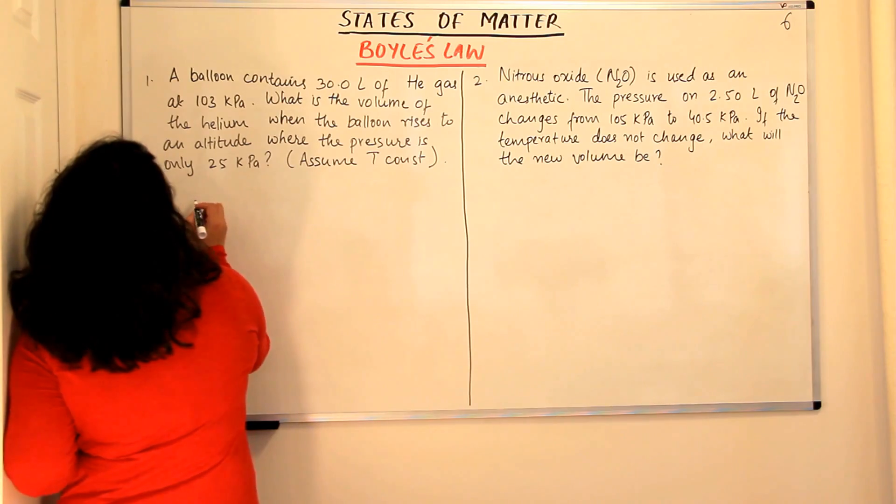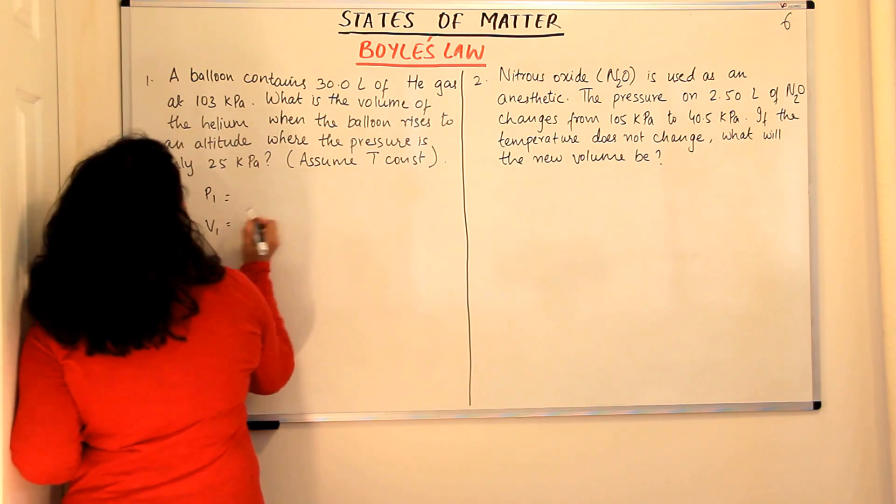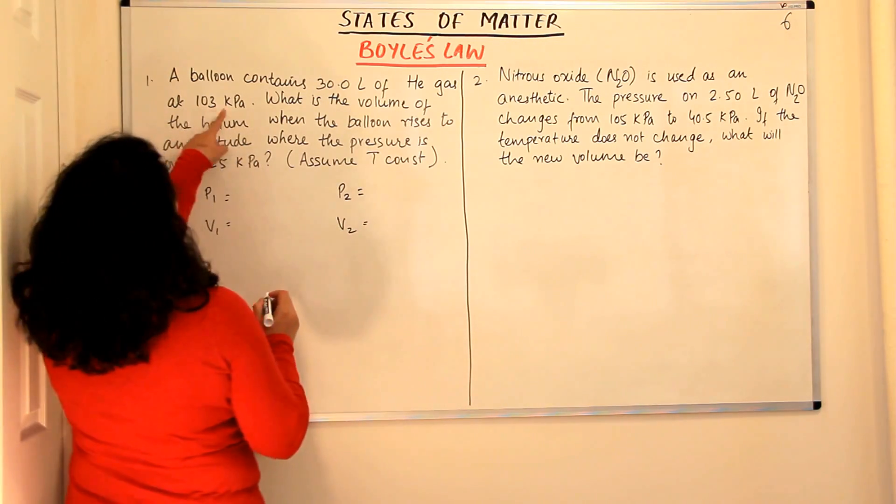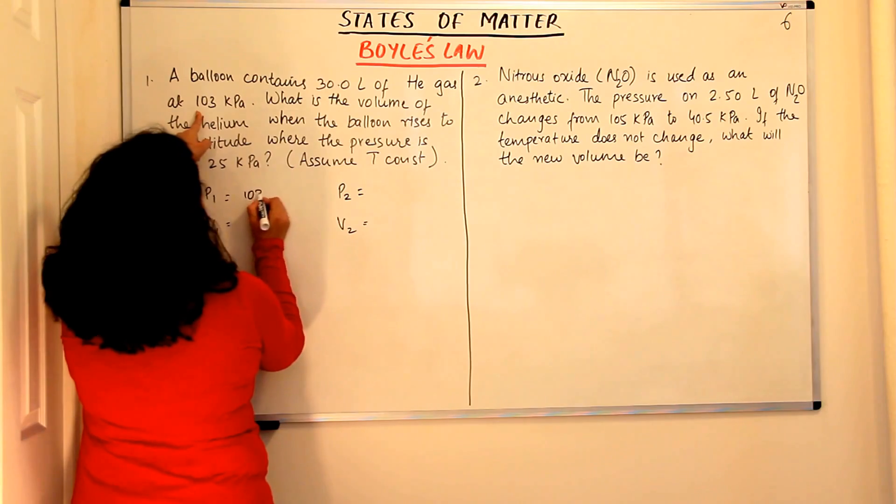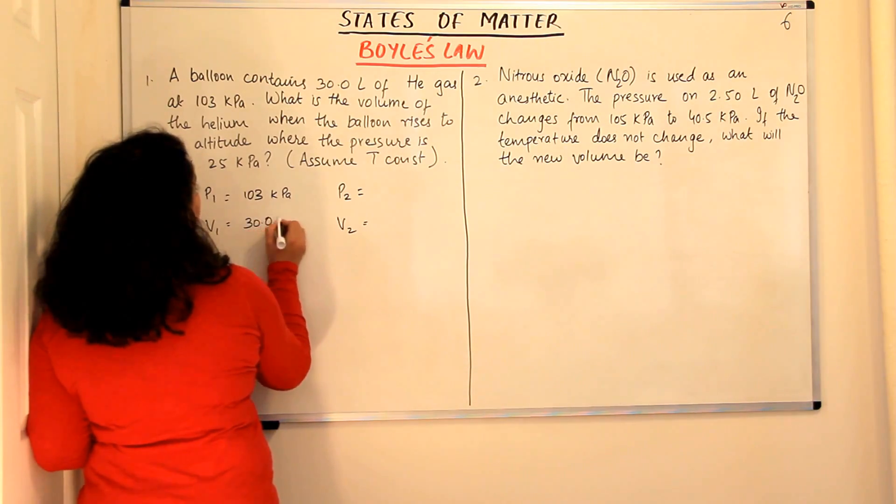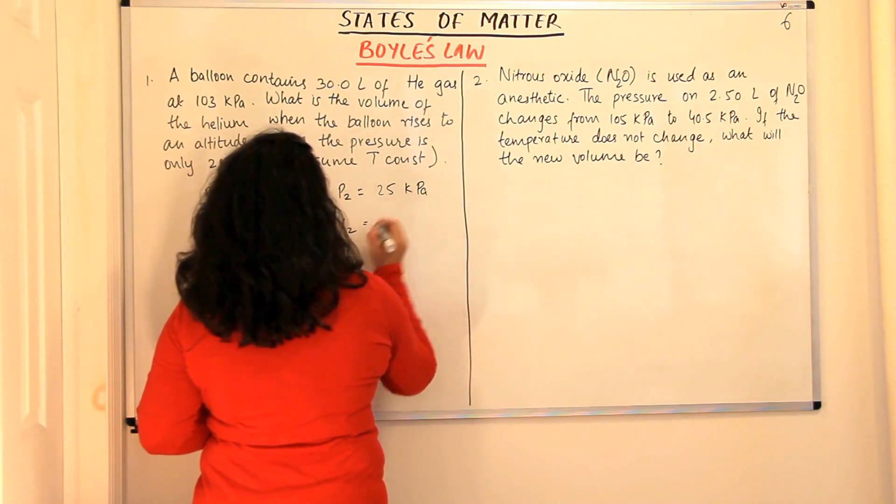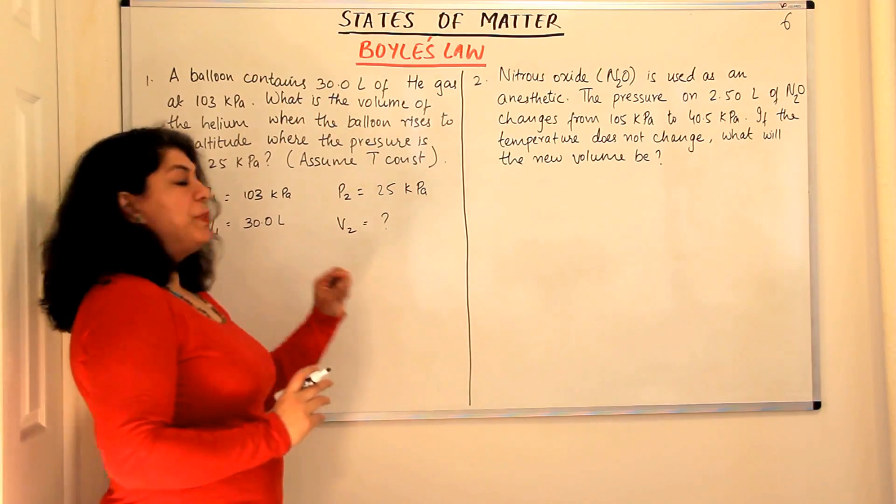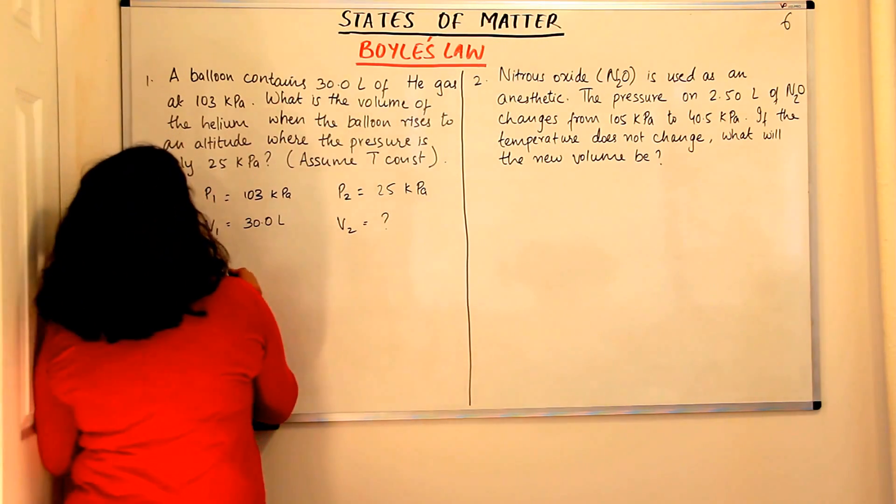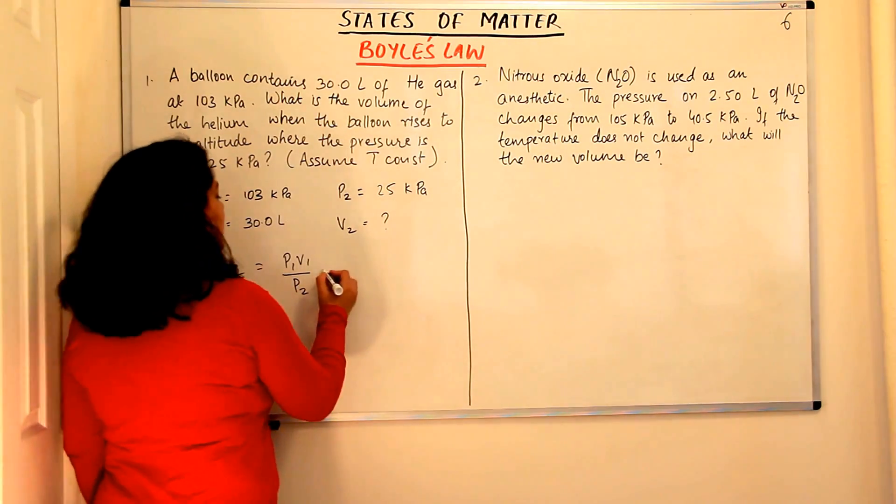So we say, assuming temperature is constant, we are looking for P1V1 to use Boyle's law and P2 and V2. P1, pressure 1 given to us is 103 kilopascals. The volume 1 given to us is 30.0 litres. P2, pressure 2 is 25 kilopascals and V2 is what we are looking for. Using the equation P1V1 is equal to P2V2, rearranging the equations, we will get V2 would be equal to P1V1 upon P2. So let's plug in the values.